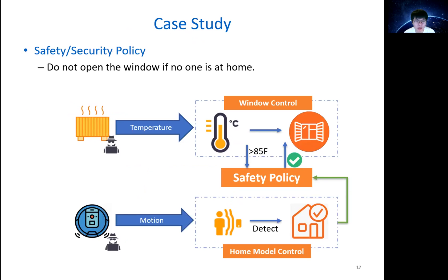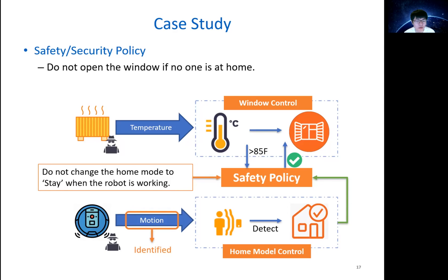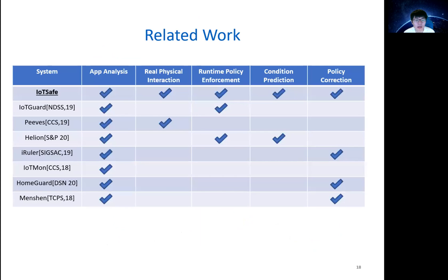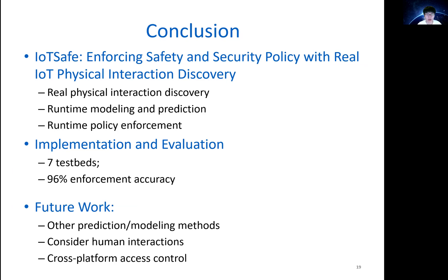We examined the effectiveness of IoT Safe in enforcing safety policies by running a malicious attack scenario. The system first detects the interaction between the robot and the motion sensor by dynamic testing. Our system then gives hints to the user to set additional trigger conditions for existing policies. For example, if the user sets an additional condition to not change the home mode to stay when the robot is working, the home mode control app is blocked when the attacker triggers the cleaner robot, so the attacker cannot open the window anymore. Our system provides real physical interaction discovery and fine-grained runtime policy enforcement, comparing favorably with recent related work.